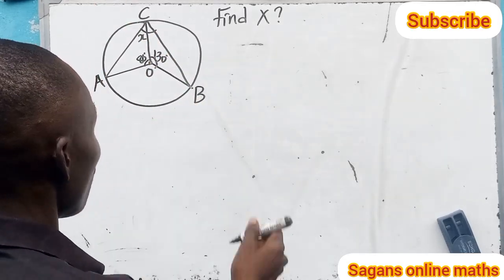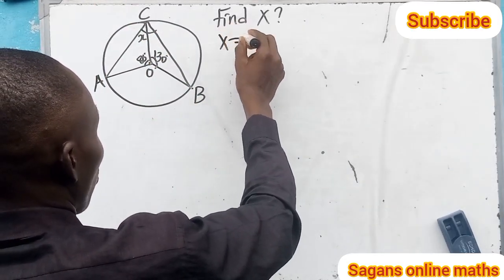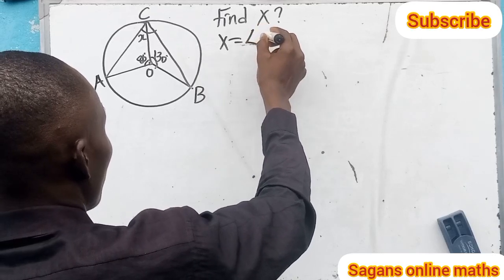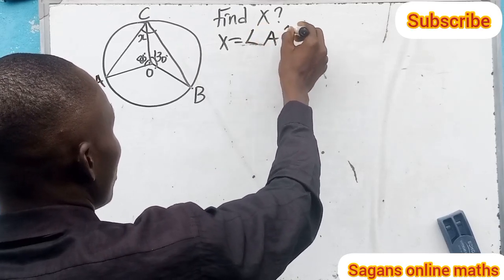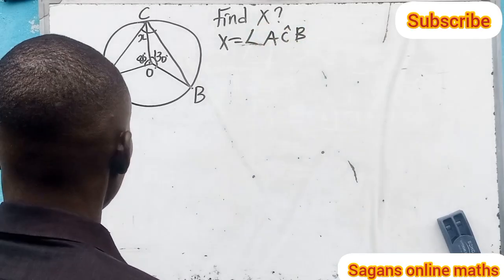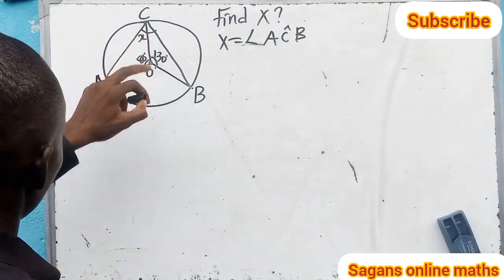Now let's check this. If here is x, that means here will also be x. Why? They are in an isosceles triangle.